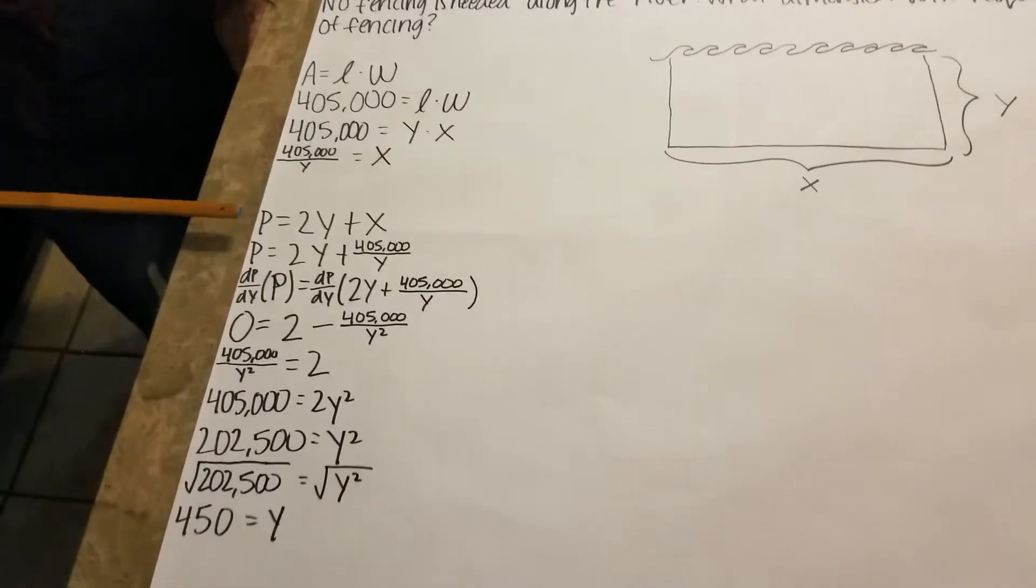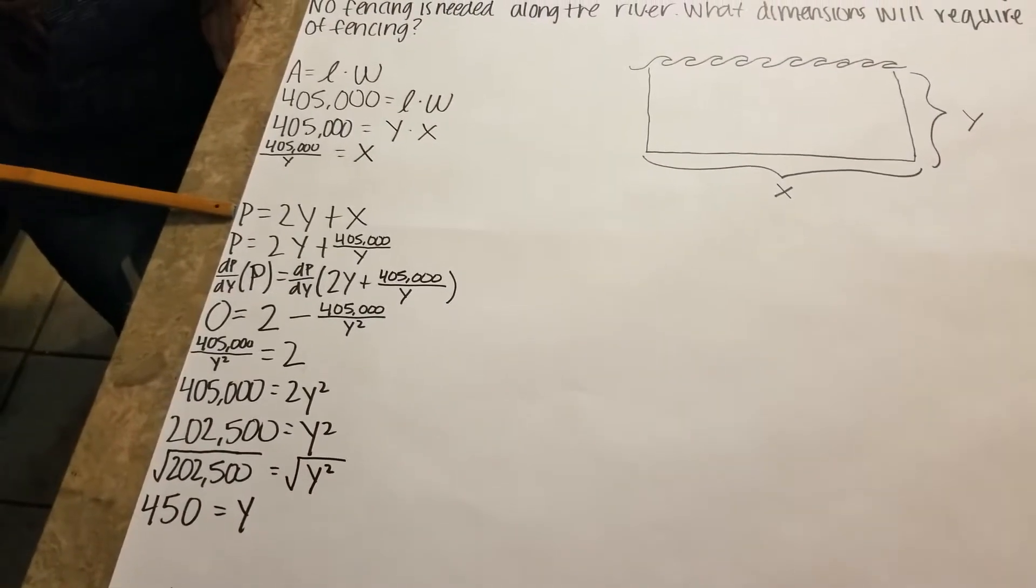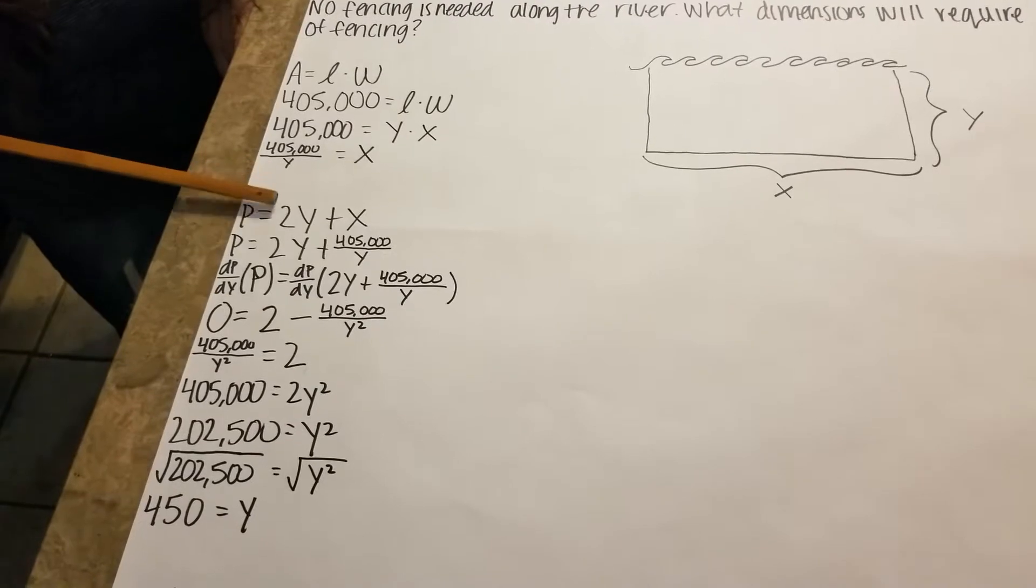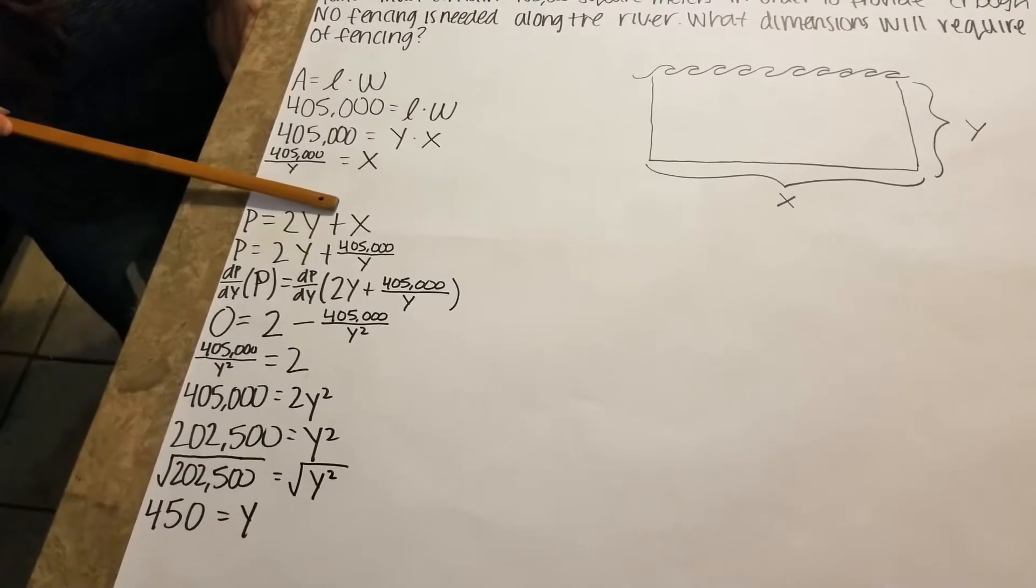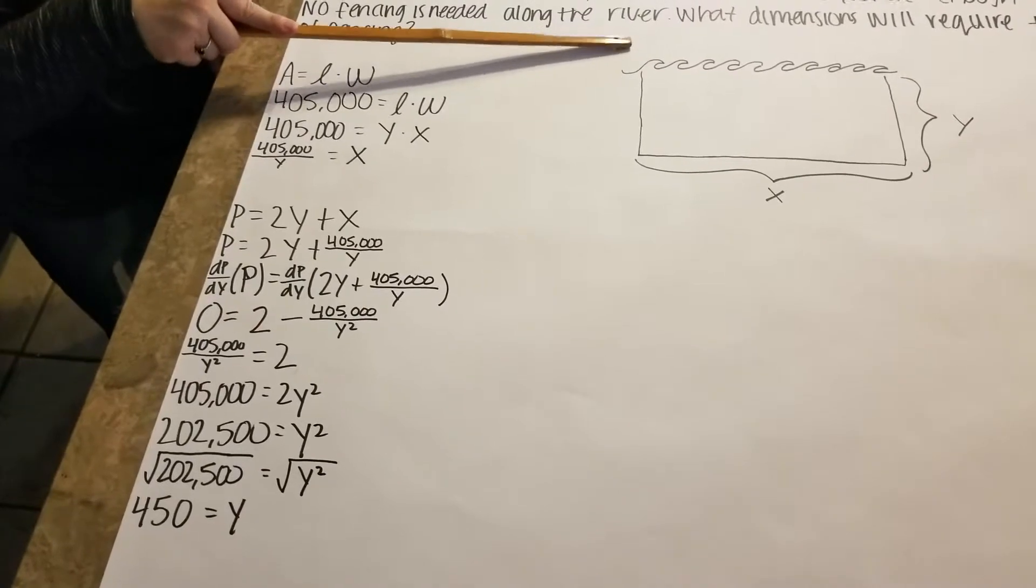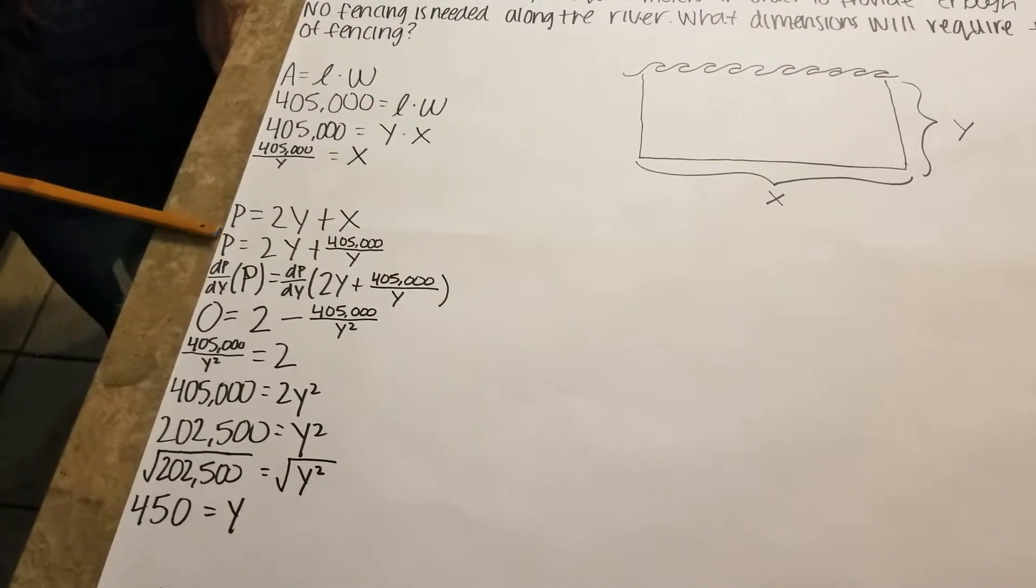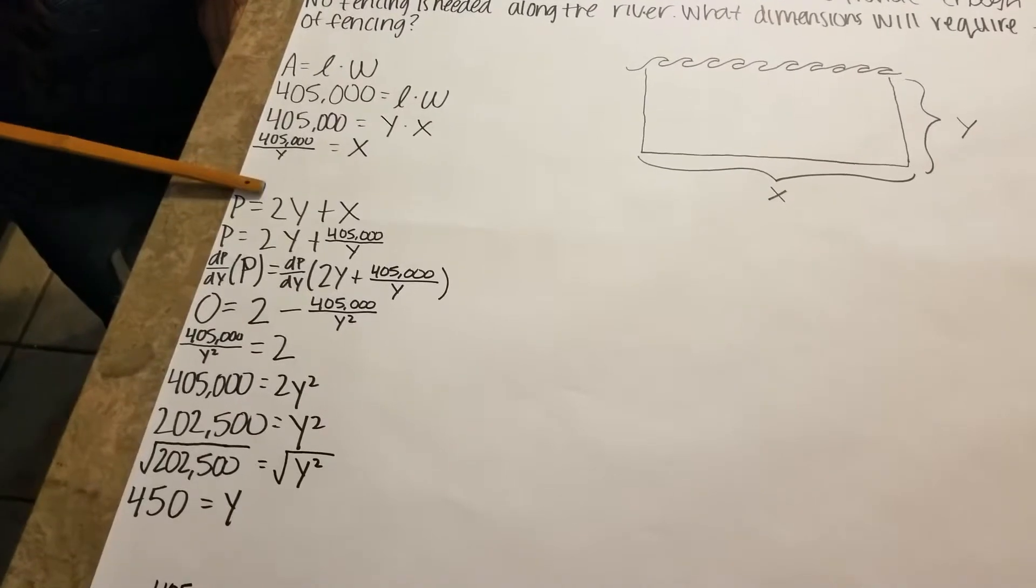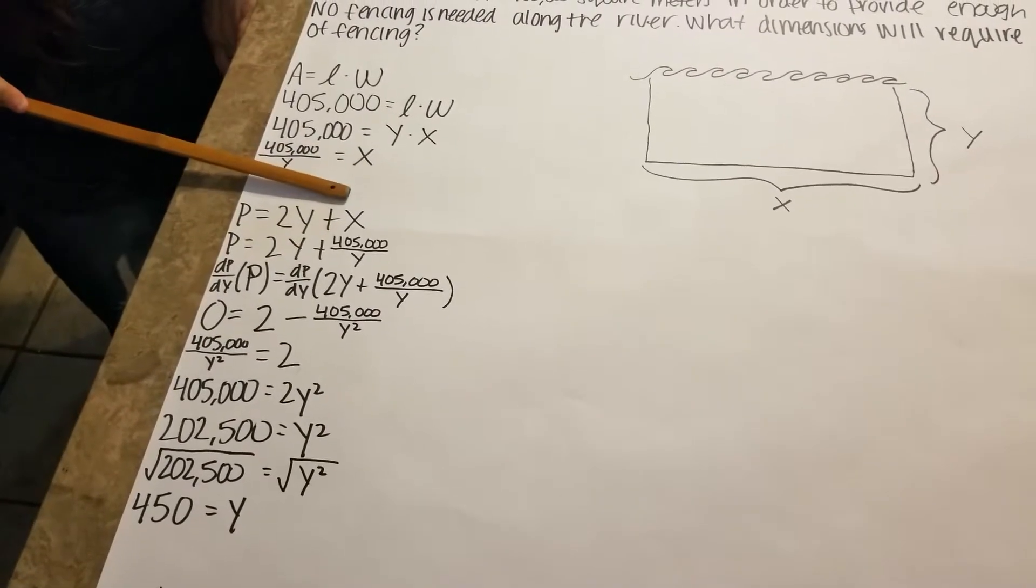We'll be using another formula, perimeter. Perimeter usually equals 2Y plus 2X. But based on the picture we will only have 1X because of the river. So for this problem, perimeter is equal to 2Y plus only 1X.